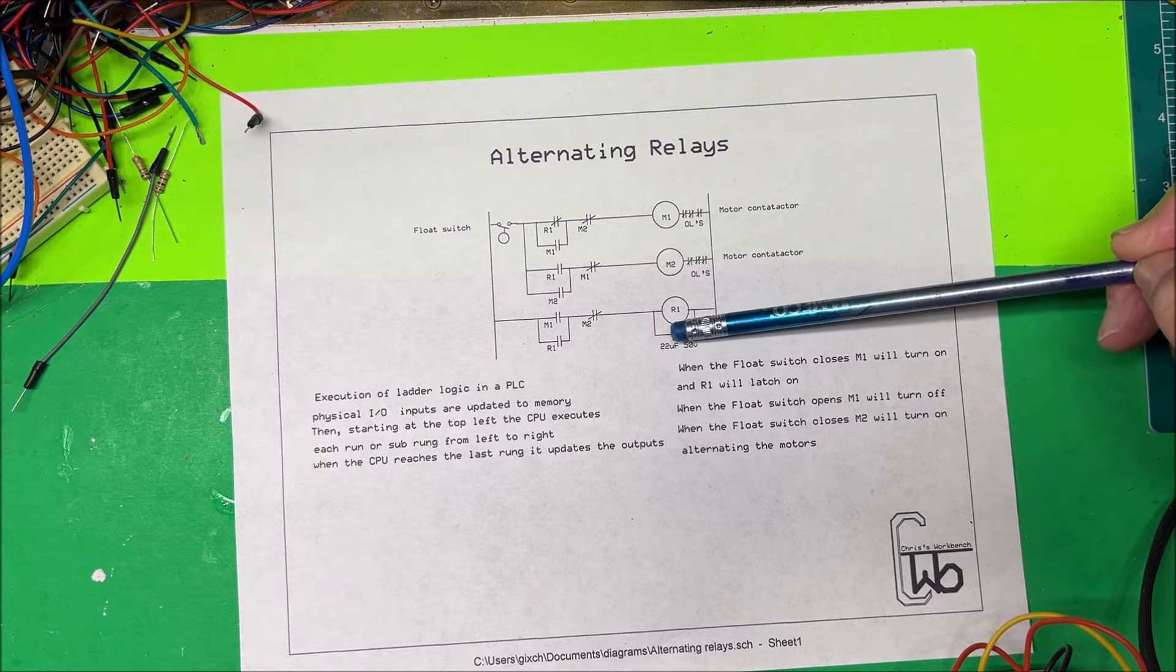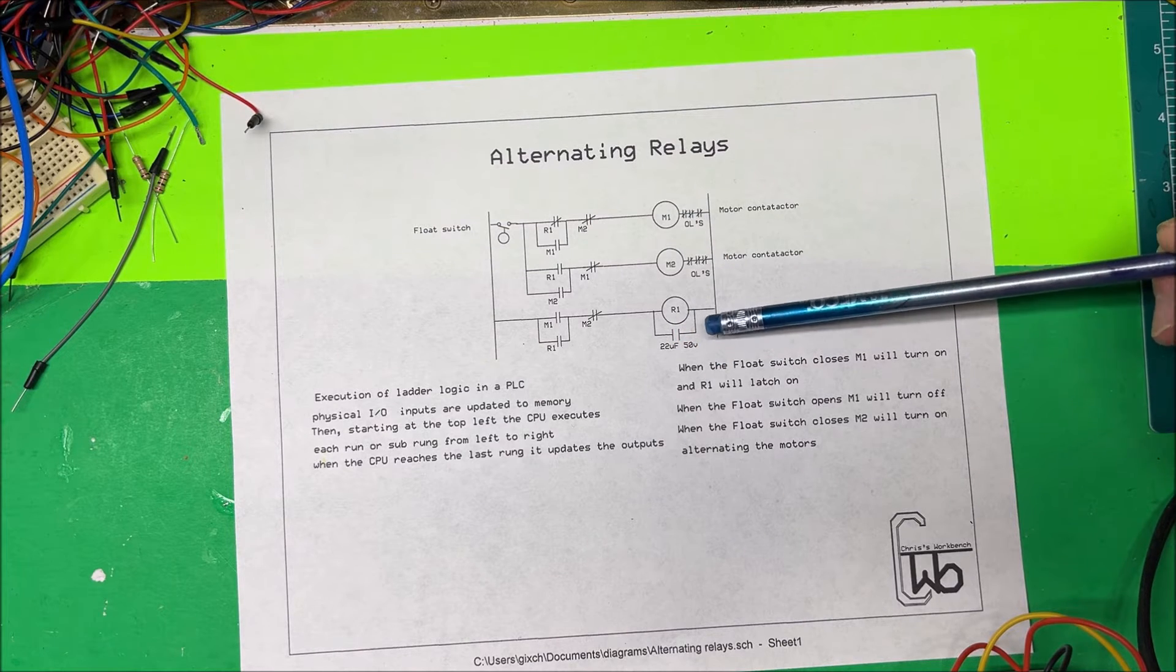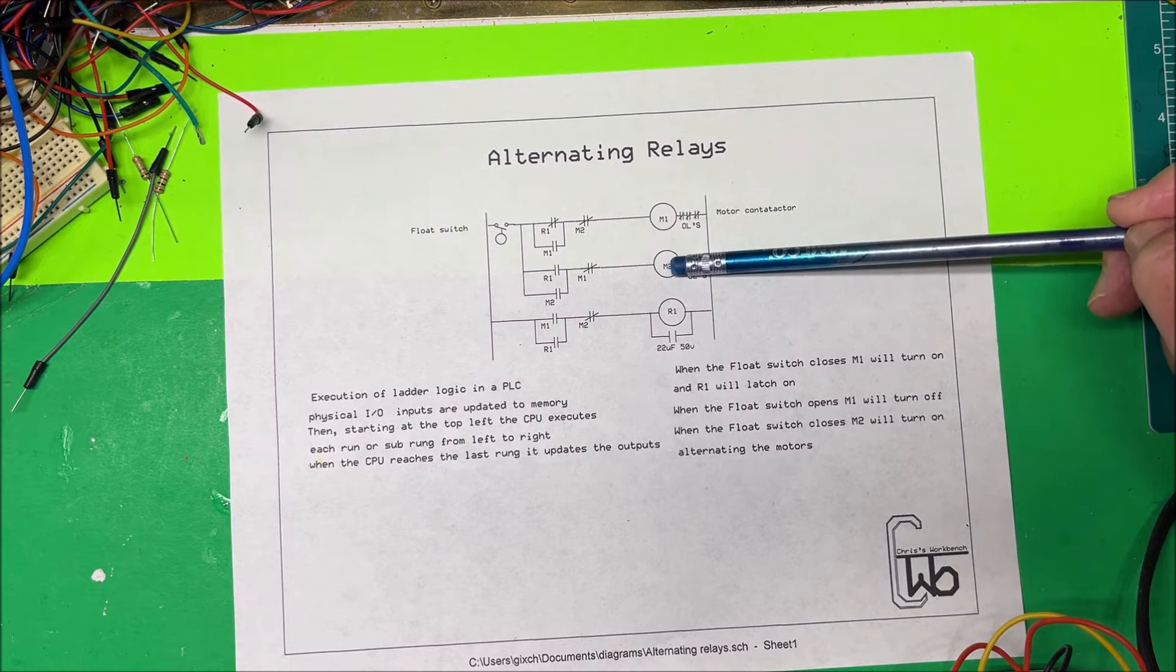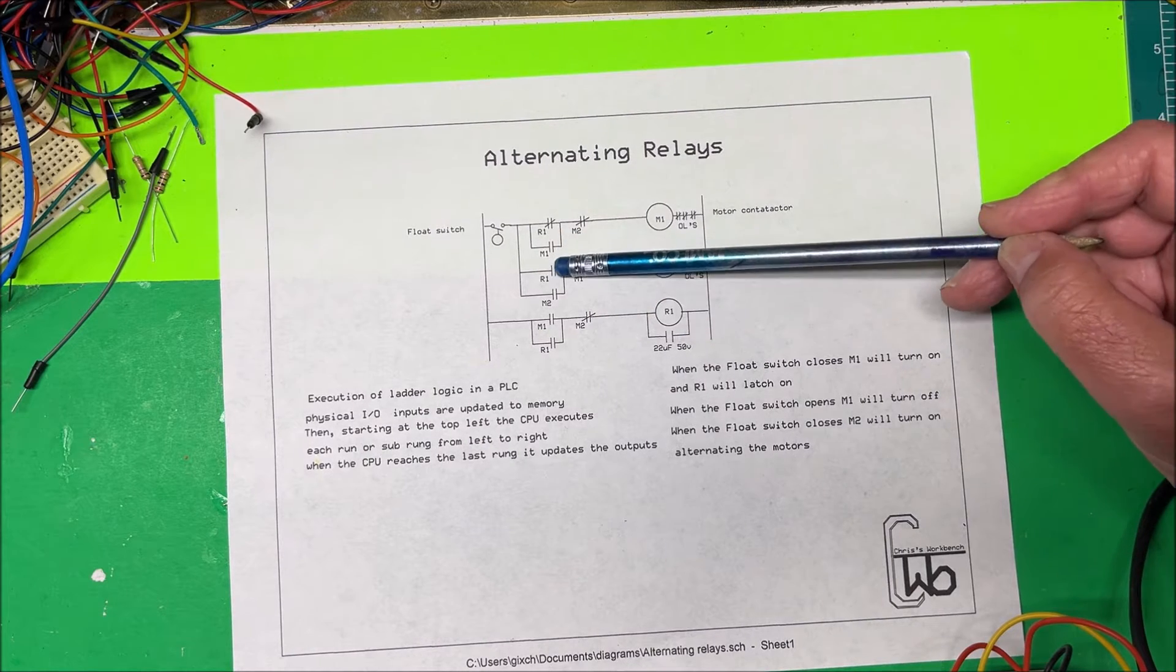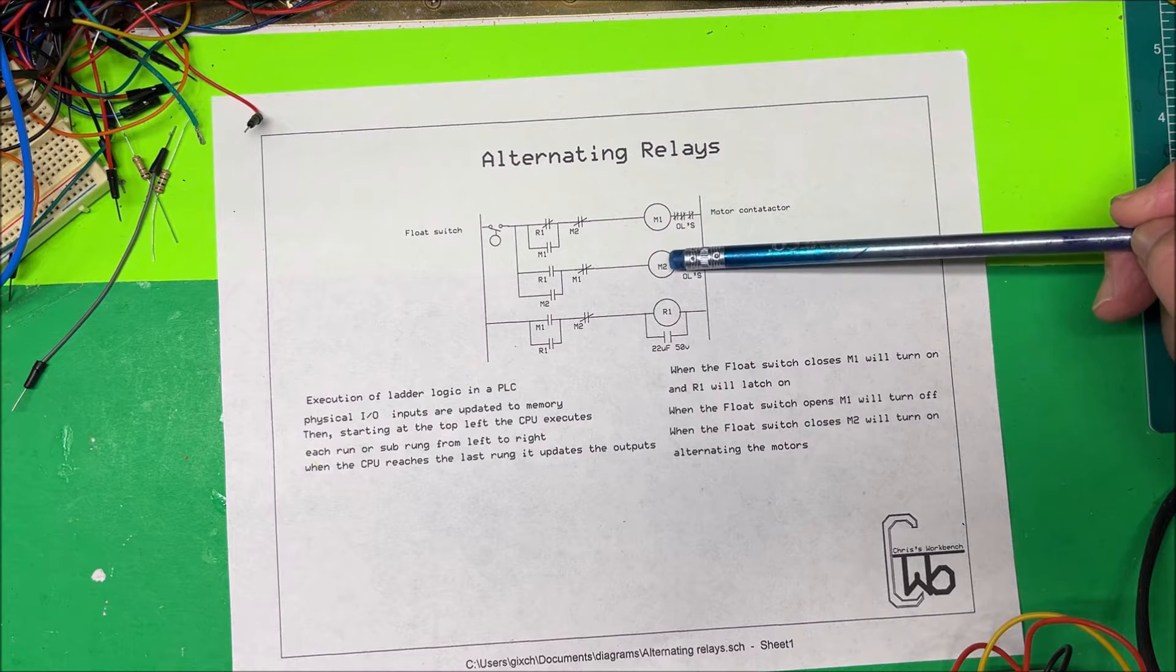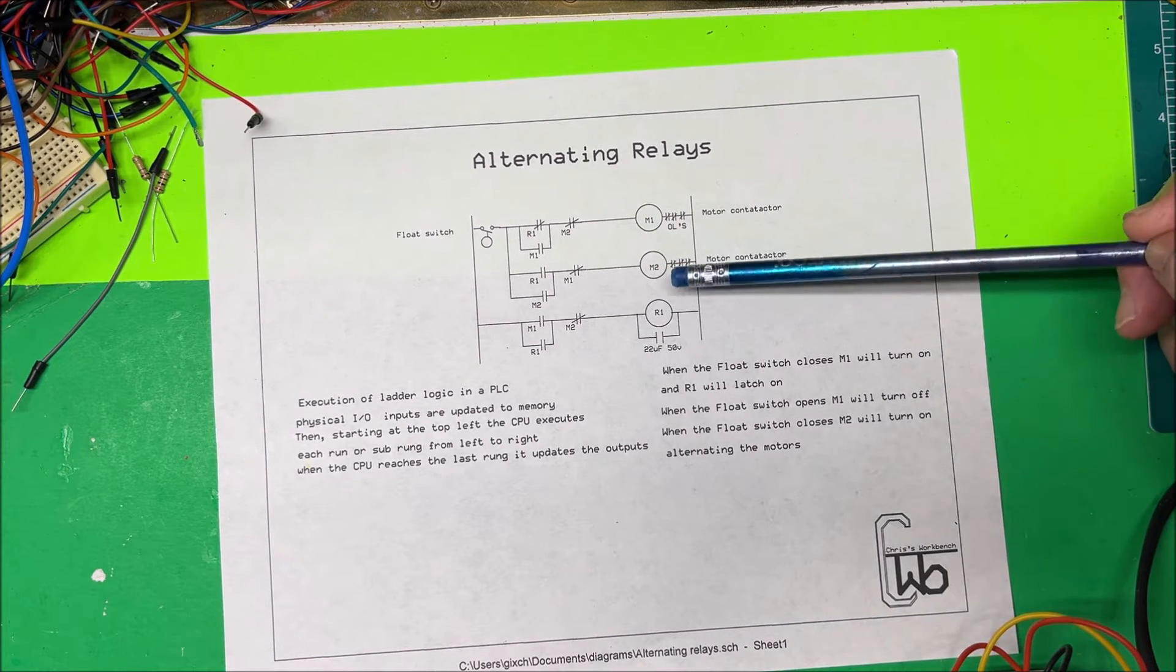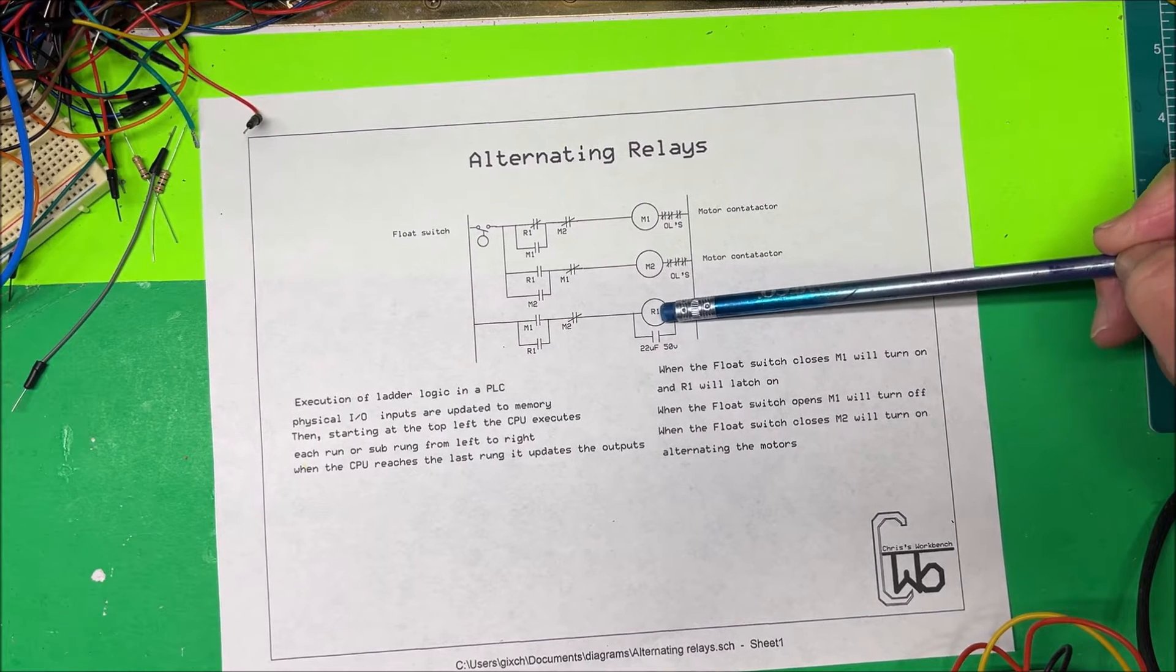I have a capacitor down here - this one happens to be 22 microfarad at 50 volts. It's a 24 volt system. What you need to do is when this contact closes, this is going to open up, but we need to have this R1 stay closed until this opens up. So we add a capacitor across here and it just puts a little time delay in that relay. The relay is not going to shut off right away.